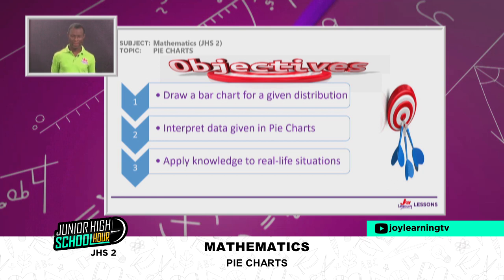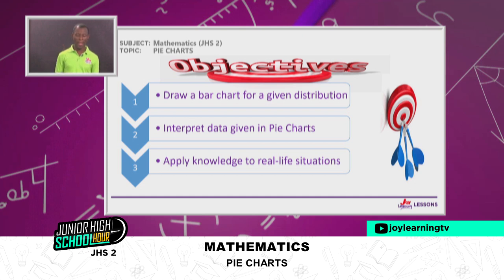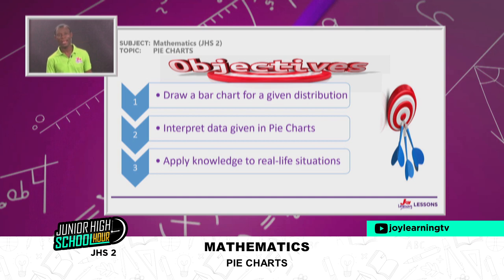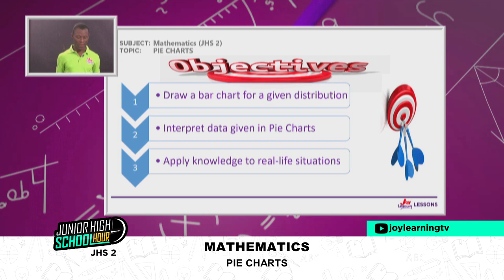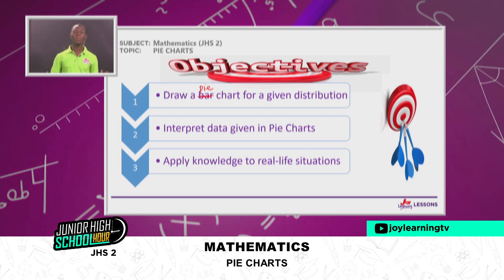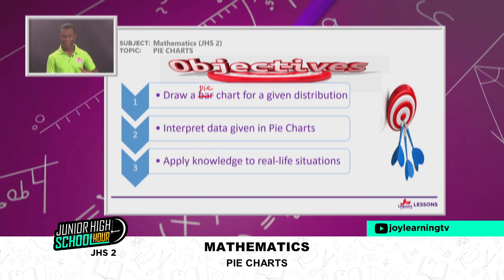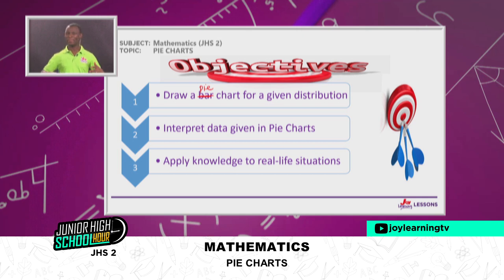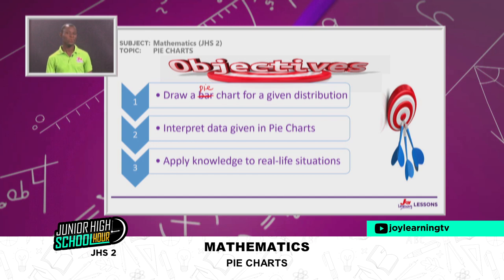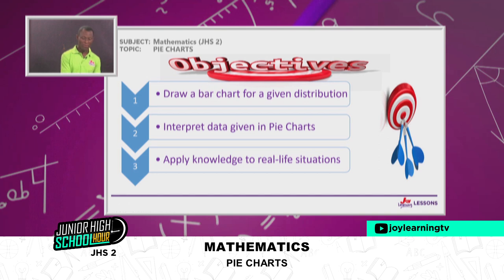Within a space of 60 minutes or less, we want to do activities that will give us the understanding to be able to draw a pie chart for a given distribution. Then, when we have done so, we will interpret the data given in a pie chart. And the knowledge we gain, we will apply in real-life situations — because pie chart is an aspect of statistics.